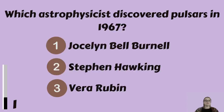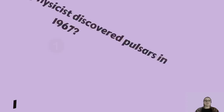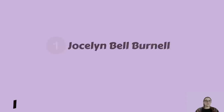Which astrophysicist discovered pulsars in 1967? Jocelyn Bell Burnell, Stephen Hawking, or Vera Rubin? That would be Jocelyn Bell Burnell.